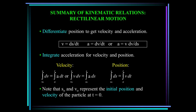Here's a summary. We can differentiate position, ds/dt, to get velocity and acceleration. We can integrate acceleration to get velocity and position. Note that s₀ and v₀ represent the initial position and velocity of the particle at t equals zero. Those are the initial conditions.